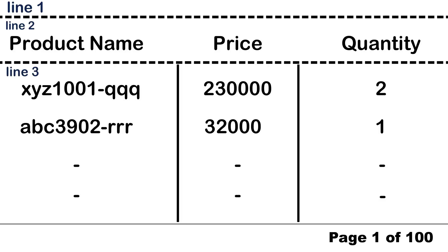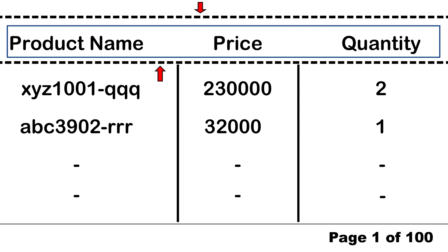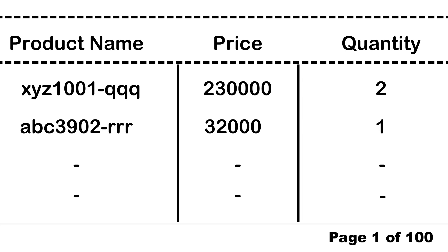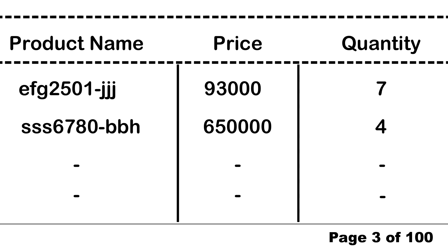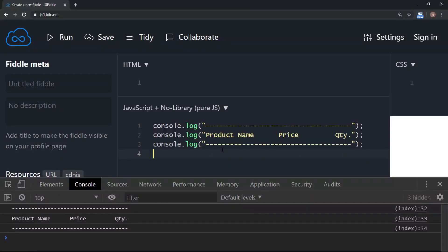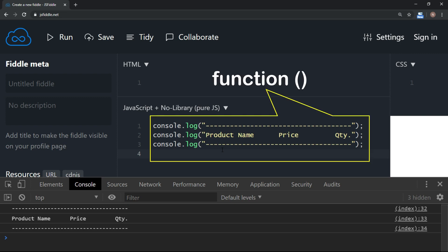Imagine that these three lines are part of a report which has more than 100 pages. So every time when you want to print a header, you are going to use these three lines. Because the report is of 100 pages, you will have to write these three lines at the beginning of every page — and you don't even know how many pages the report may have. When you want to define this process in a sub-program and call it again and again whenever it is needed, then you define this process in a function.